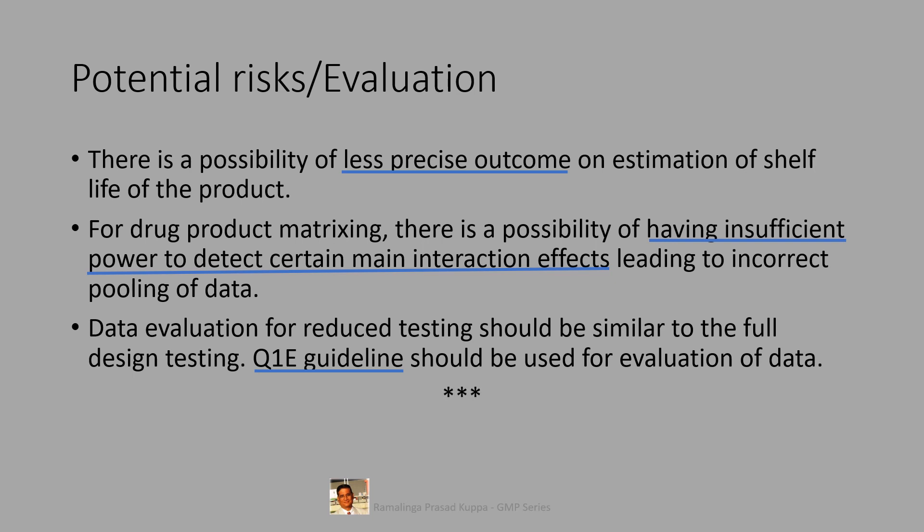I hope that the understanding of ICH Q1D is better now. Generally, the API manufacturers skip this guideline. The guideline mostly addresses the drug product bracketing and matrixing because of many common factors in formulation. However, the scope of the guideline includes the drug substance also. So drug substances or APIs which are packaged in different types of schemes may also be considered for bracketing and matrixing.